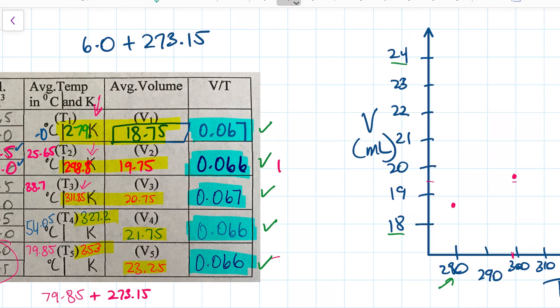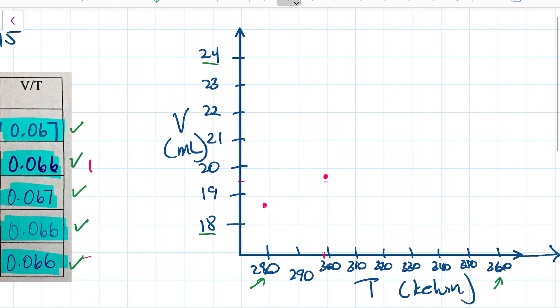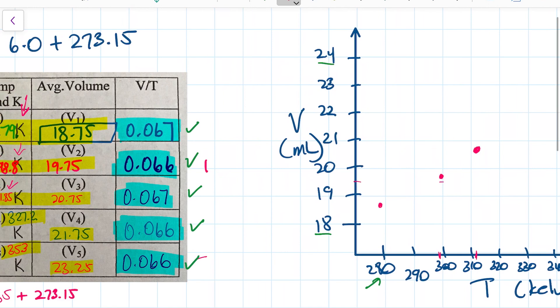And then with my next one, I'm going to plot 311, which we're going to round to 312 with 20.75. 312 is about here, with 20.75 about here.